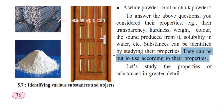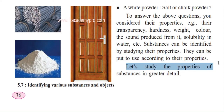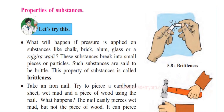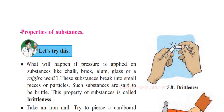The wood that we see is used to make furniture. Glass is used for so many things. Iron and aluminium — we use these because of their properties. We make use of them in particular ways. Now let's study the properties of substances in greater detail.